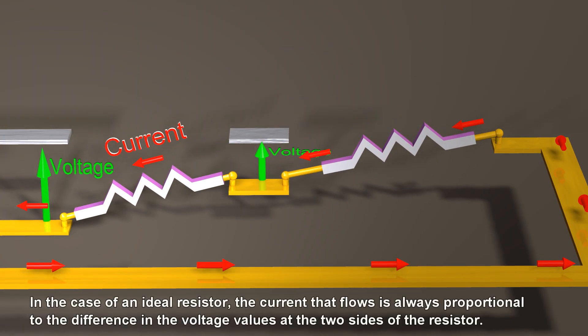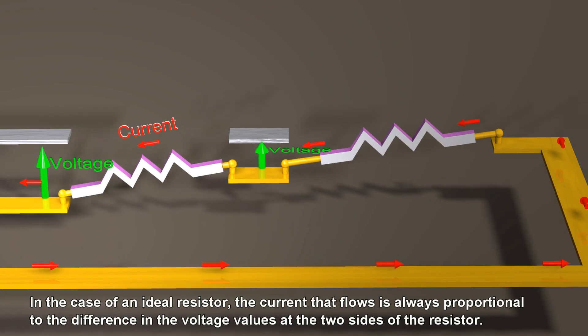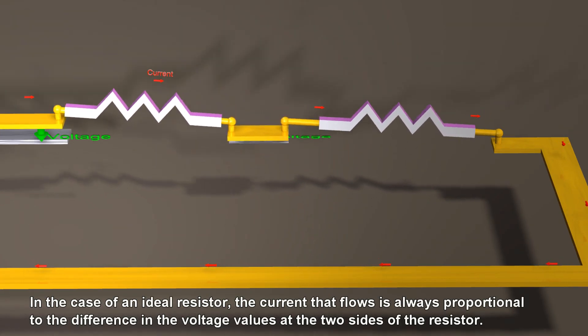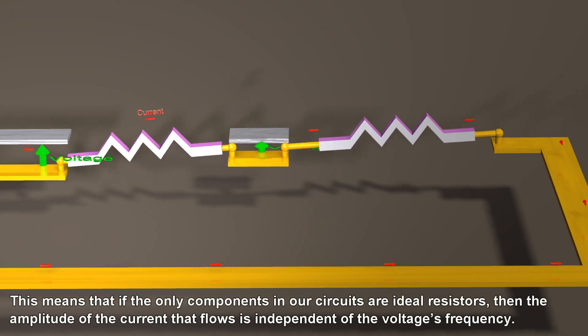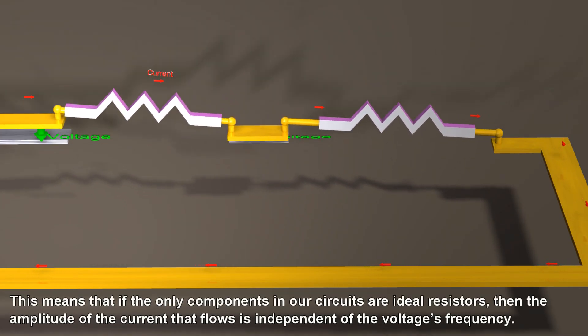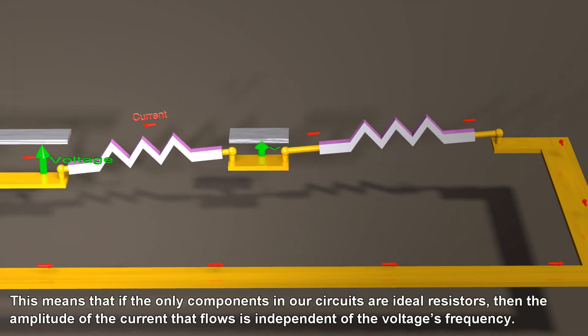In the case of an ideal resistor, the current that flows is always proportional to the difference in the voltage values at the two sides of the resistor. This means that if the only components in our circuit are ideal resistors, then the amplitude of the current that flows is independent of the voltage's frequency.